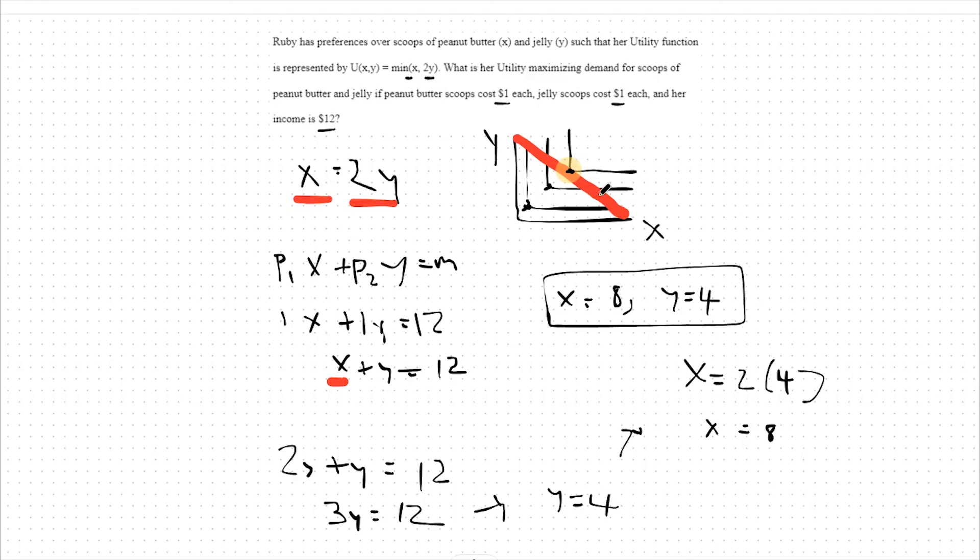Interpretation-wise, perfect complements means that we like to consume these two goods together, and thus we want the same utility from both in order to optimize our utility.